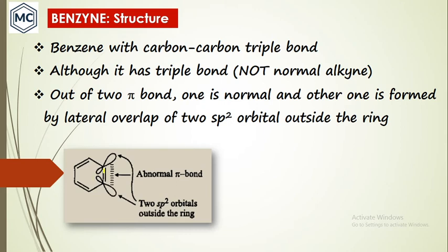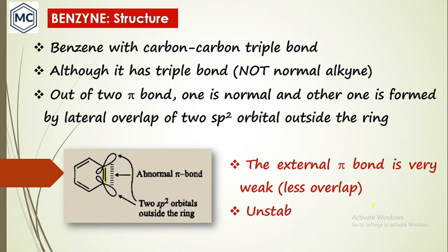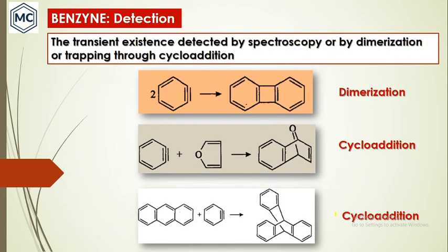The normal pi bond is within the ring; the abnormal pi bond is formed by lateral overlap of two sp2 hybrid orbitals outside the ring. This external pi bond is slightly deviated from the normal plane, making it very unstable and weak due to less orbital overlap — which is why benzyne is highly reactive.